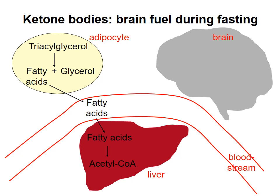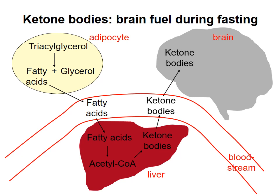The main concept is illustrated on this diagram. The liver, but not the brain, is able to absorb fatty acids from the bloodstream. The liver uses some of the fatty acids for its own energy needs, but also converts some acetyl-CoA to ketone bodies, which it releases into the bloodstream.